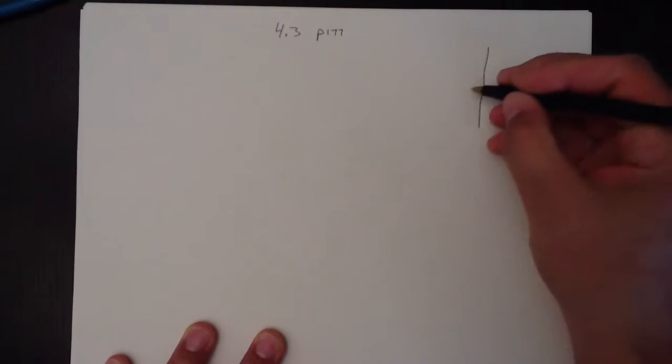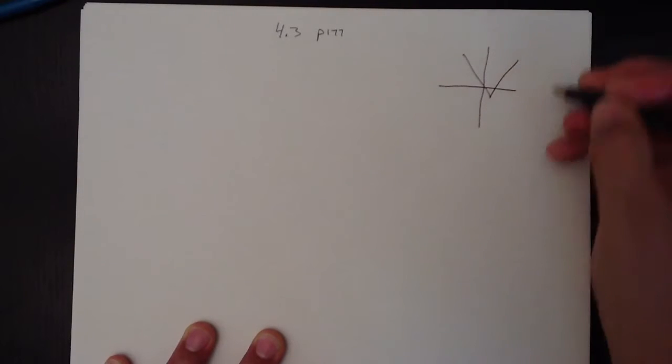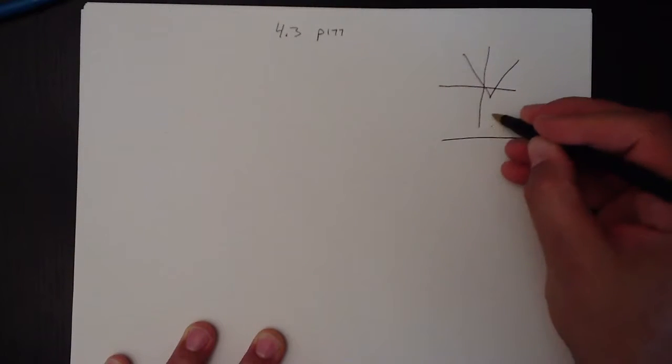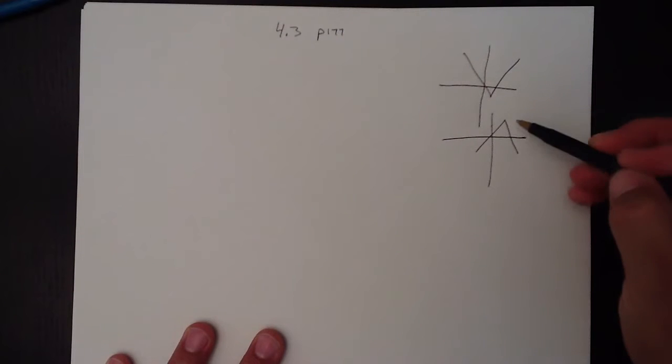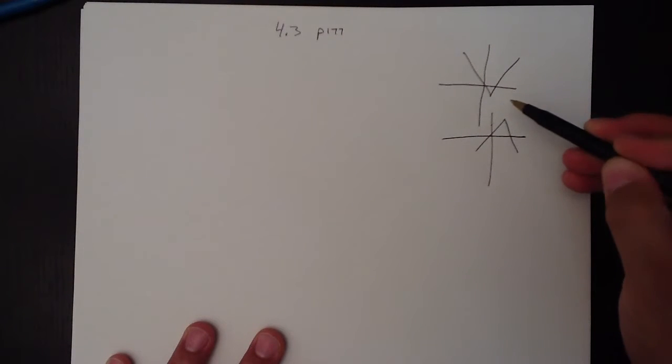This is a video to explain why an absolute value function when it's graphed will usually look like this, or it will look like this. A linear absolute value function that is. Why does it look like that?